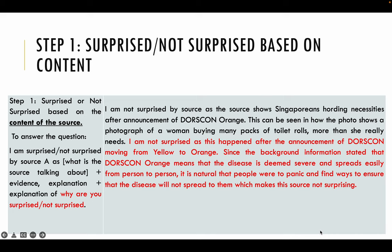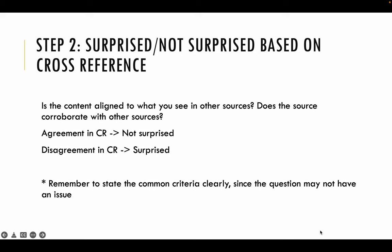Now when you cross-refer, you need to find a source that either shows that yes, people are panicking because the whole COVID situation is getting worse, or no, people are not panicking — they are pretty much getting it under control. When you cross-refer, ask yourself: is the content aligned to what you see in other sources? Does the source corroborate with other sources? If there is agreement in cross-referencing, it means not surprised. If there's a disagreement, it means that you are surprised. Always remember to state the common criteria clearly. Since source A shows people panicking as the COVID situation has worsened, you need to find other sources that show whether yes, people are panicking because the COVID situation has gotten worse, or no, people are not panicking. That is your common criteria — that is your base point.